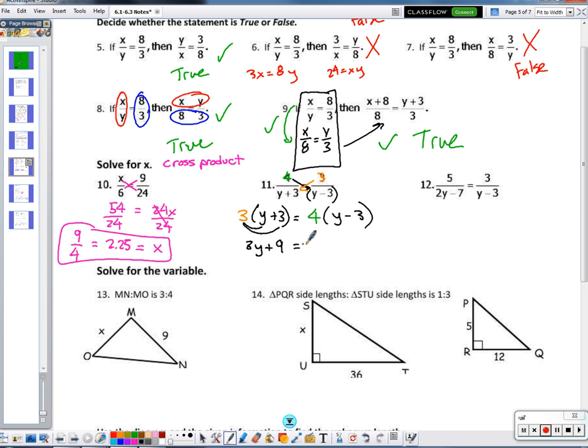The biggest mistake students make with these types of problems is they only distribute 3 and the 4 to the variable, rather to everything in the parentheses. I have to distribute the 3 into the y and into that 3. So that gives me 3y + 9. Here when I distribute, I end up with 4y - 12. So when I take away 3y's from 4y's, I end up with 1y. And when I add 12 to 9, I end up with y equals 21.